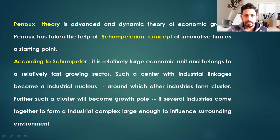In the Schumpeterian concept of the innovative firm, Perroux explained how that innovative firm became a centre of attraction and repulsion. A number of activities and industries were attracted towards that innovative firm, making it the starting point of the Growth Pole. According to Schumpeter, it is a relatively large economic unit belonging to a relatively fast-growing sector, and such a centre with industrial linkages became an industrial nucleus.